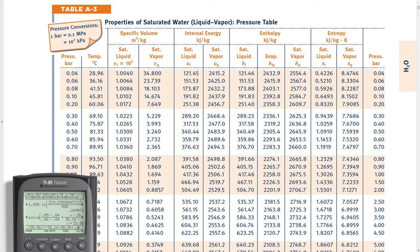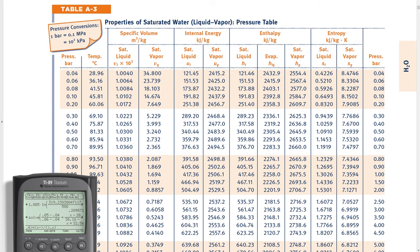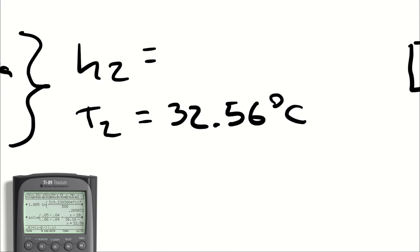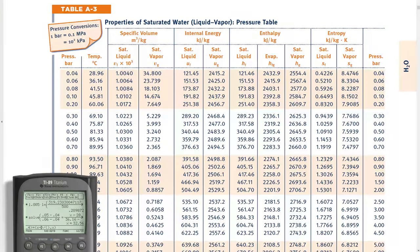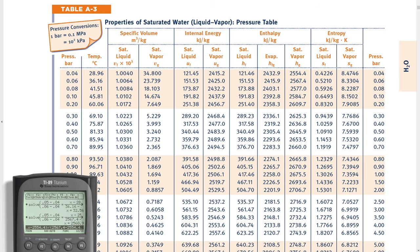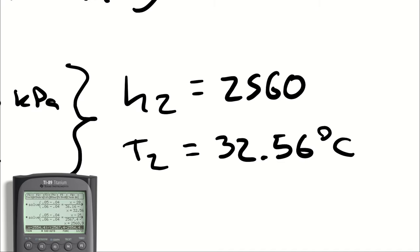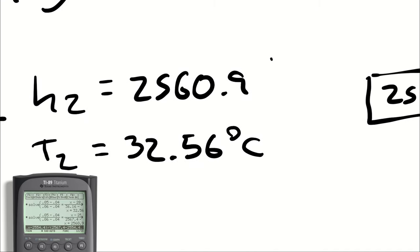The enthalpy will follow the same interpolation, just with the enthalpy values instead of the temperature values. Furthermore, note that I am interpolating for the HG values because I have a saturated vapor. So my enthalpy difference is going to be x minus the enthalpy at 0.04, which is 2554.4 divided by 2567.4 minus 2554.4 and I get 2560.9, 2560.9 kilojoules per kilogram.